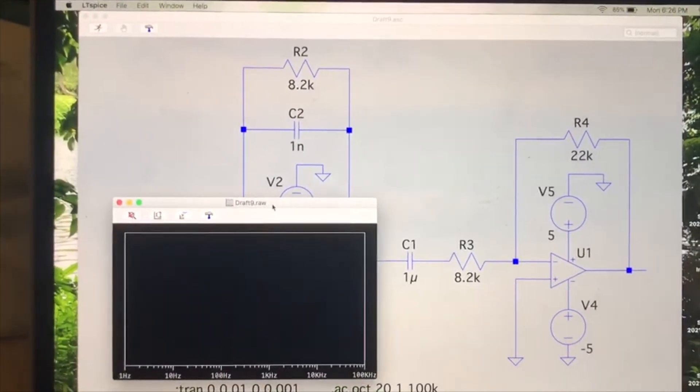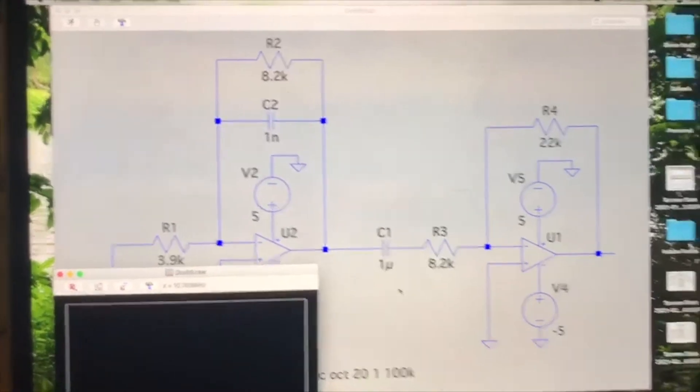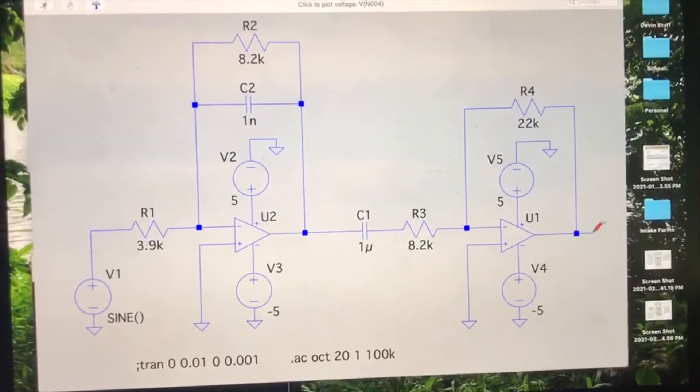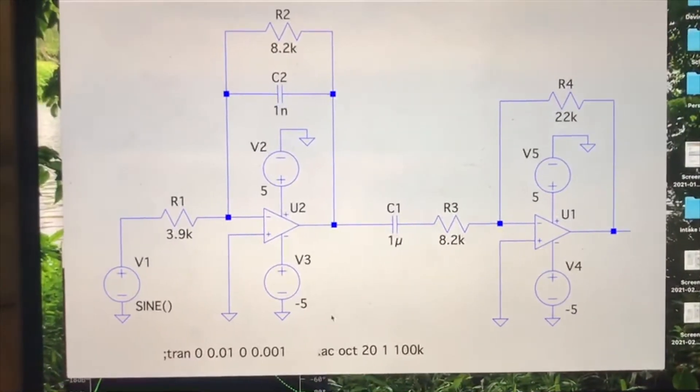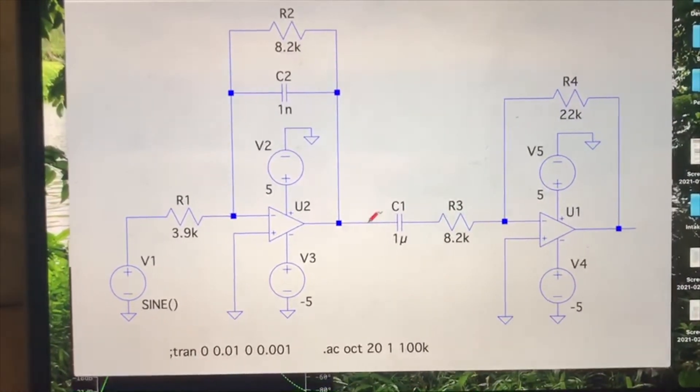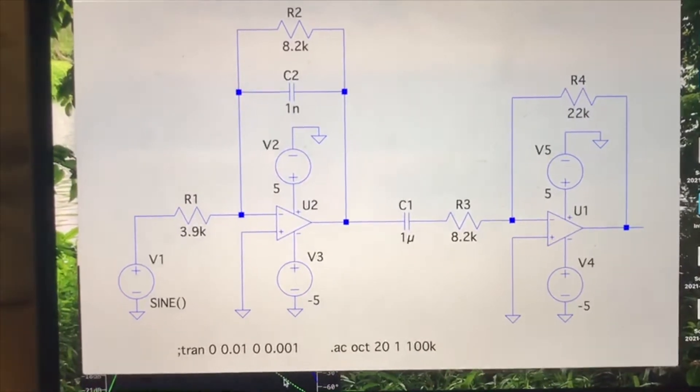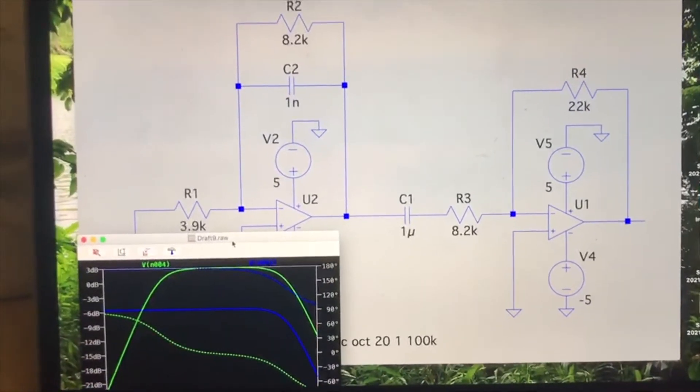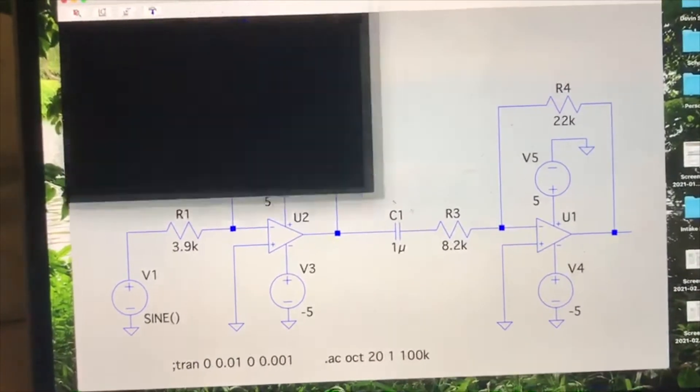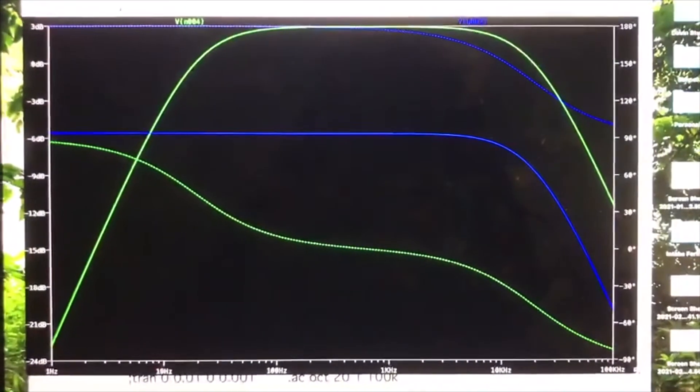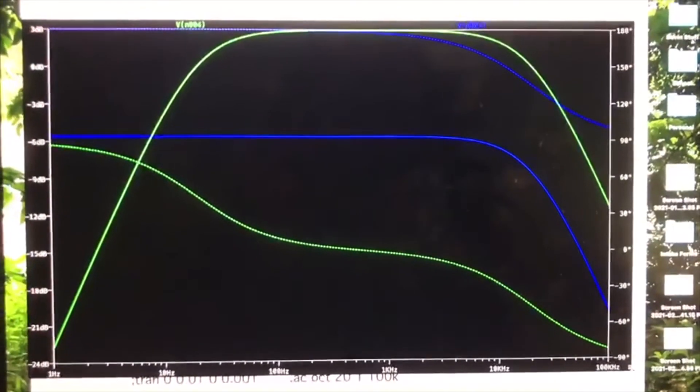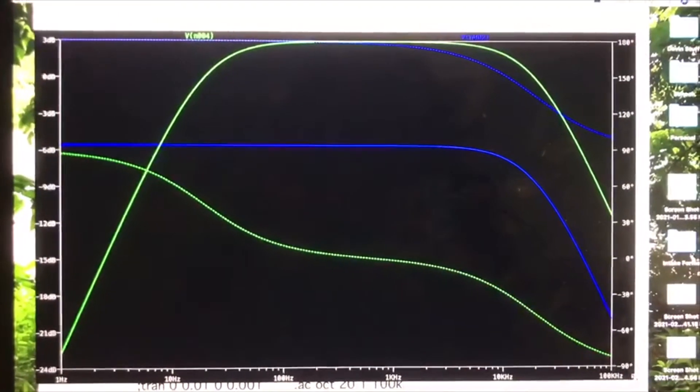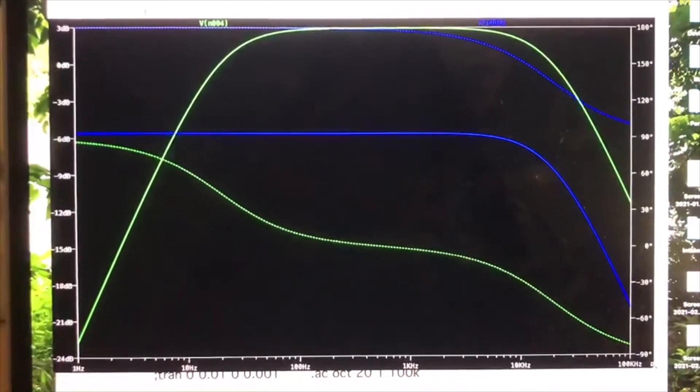If we run that, we're going to need to measure it at the output. We can also measure at the output of the lowpass filter so we can compare. We can see here the blue is the output of the lowpass filter, and then the green is the output at the end of the entire bandpass filter.